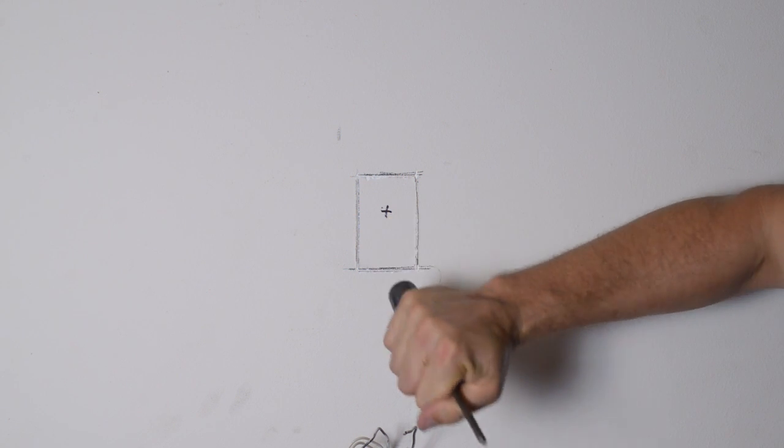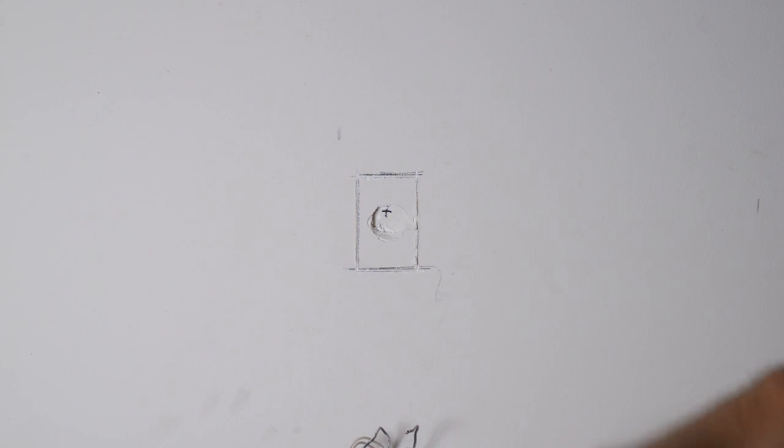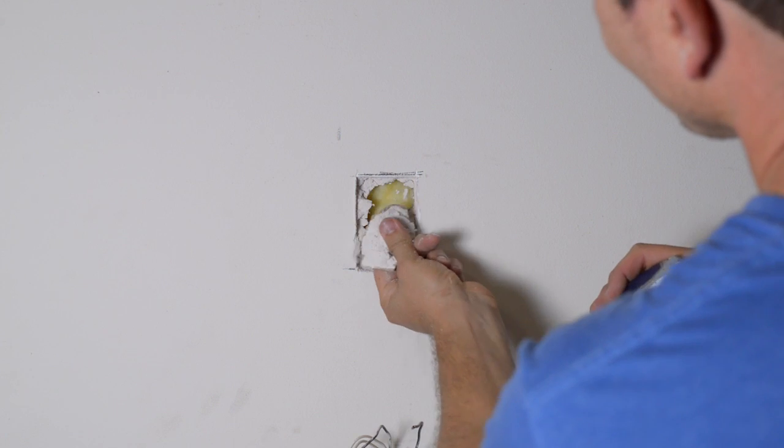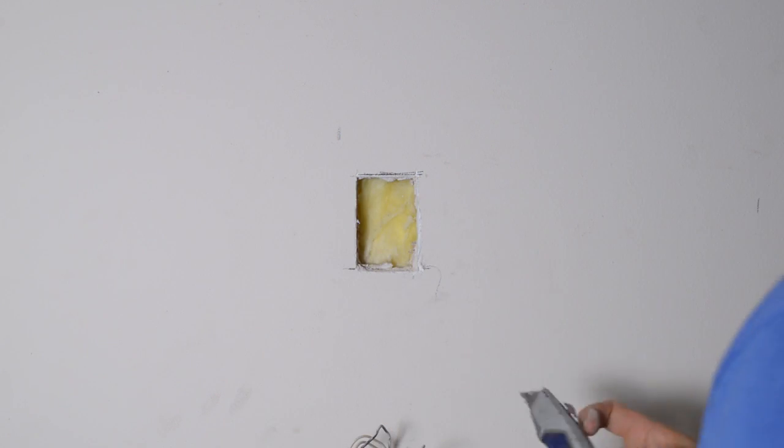And then I basically just pop a hole using the back end of a screwdriver. And then I proceed to clean out the hole and get all the drywall nasties out of there.